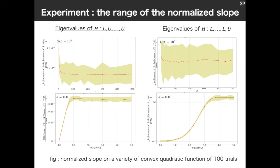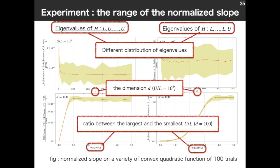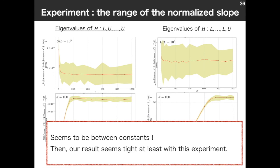These four graphs show the normalized slope in the vertical axis. The difference between left and right is in the left two, the eigenvalues of the Hessian matrix, only one eigenvalue is the smallest one, and all the rest are the largest eigenvalue. In the right, only one eigenvalue is the largest, U, and all the rest are the smallest. So we take two extreme cases of the distribution of eigenvalues of the Hessian matrix. The horizontal axis of the upper two graphs is the dimension, and the horizontal axis in the below two is U over L under log 10. So as you see, it seems to be between constants for each kind of convex quadratic function. So our result seems to be tight at least with this experiment.